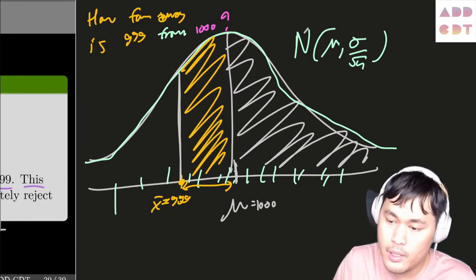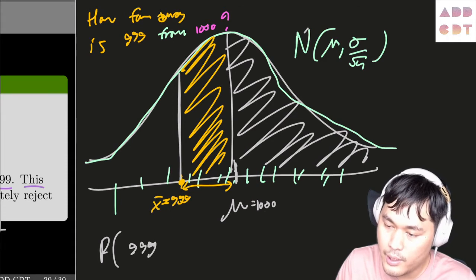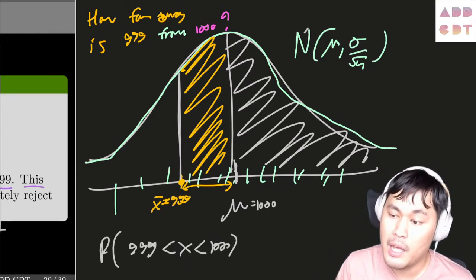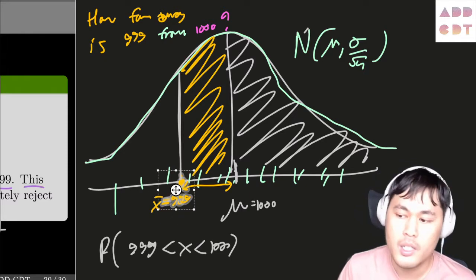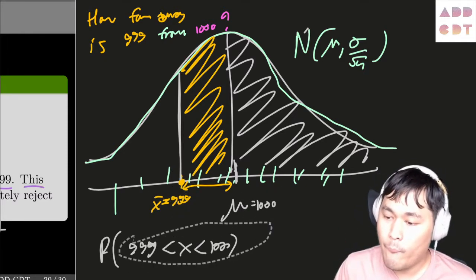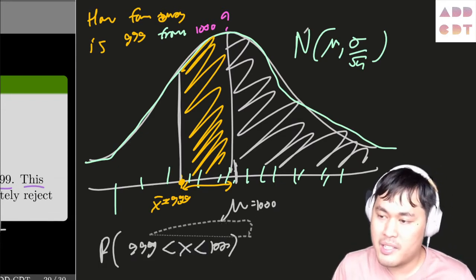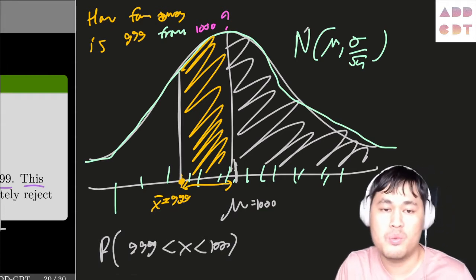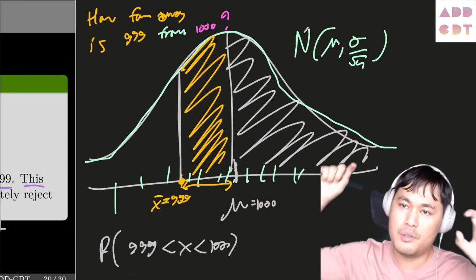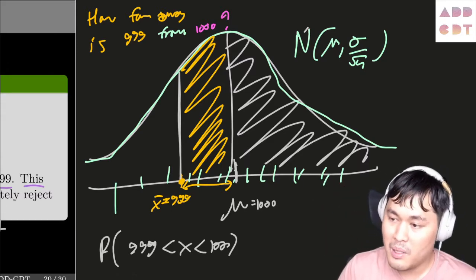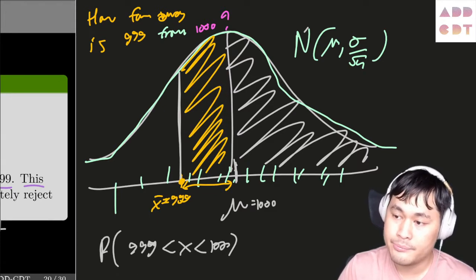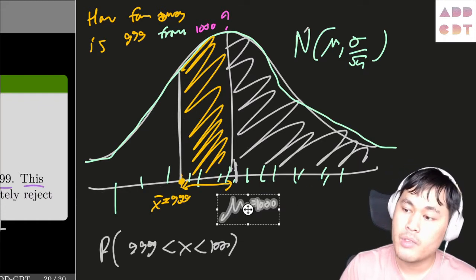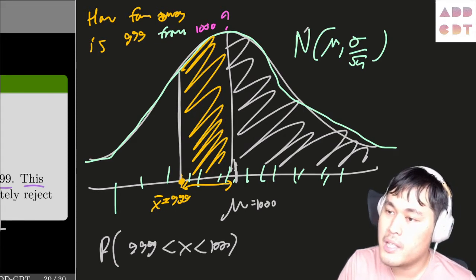We can translate that area right away, so: probability that x is less than 999. That's one way to measure the distance — how far the sample mean is from the belief population mean. However, we don't like computing that kind of probability because we have to know two values and subtract them. So instead of that orange area, what else can we use? We can use the blue area instead.